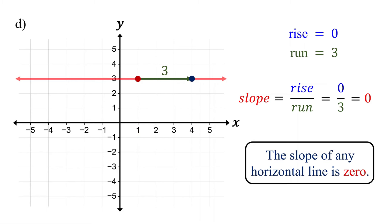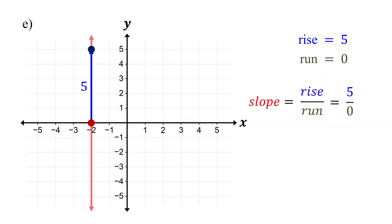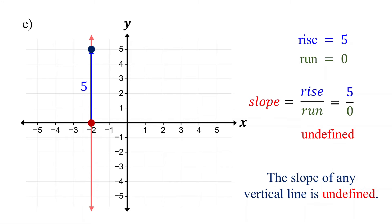But what if the line is vertical? Locate two points on the line. As we go from the bottom point to the top point, we move up five units, so the rise is five. But notice that we don't move left or right at all, so the run is zero. Therefore, the slope is five over zero. Since division by zero is undefined, the slope is undefined. Remember, the slope of any vertical line is undefined.